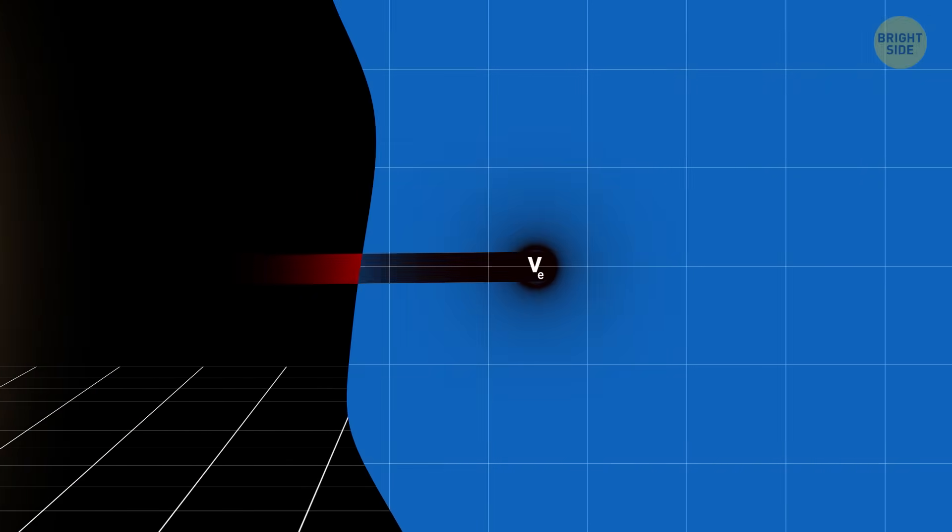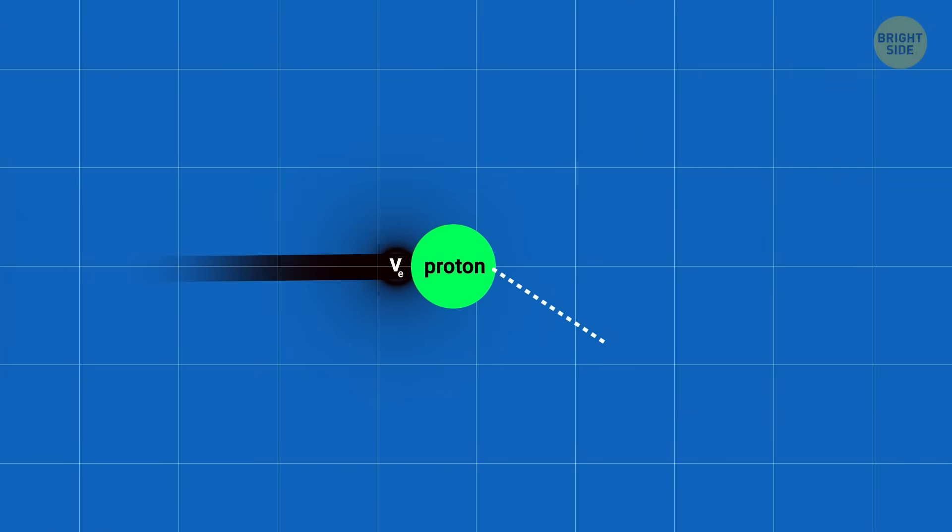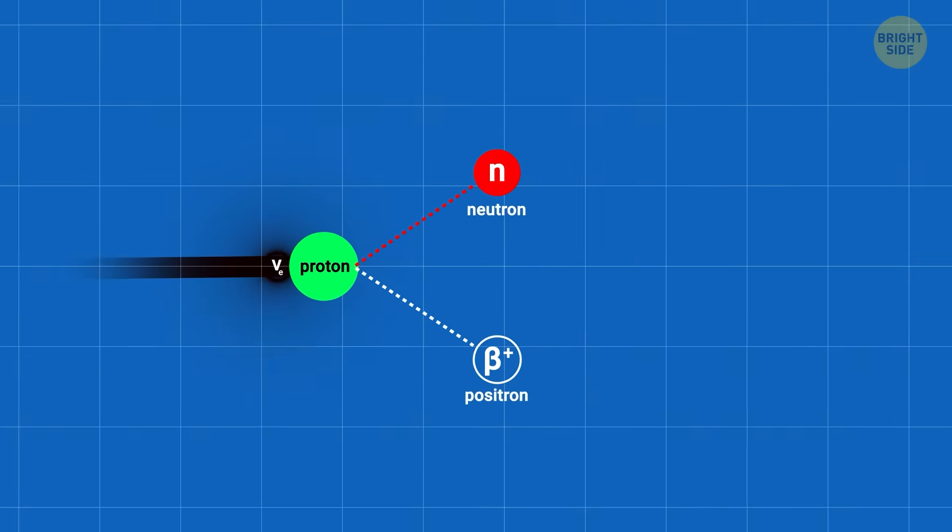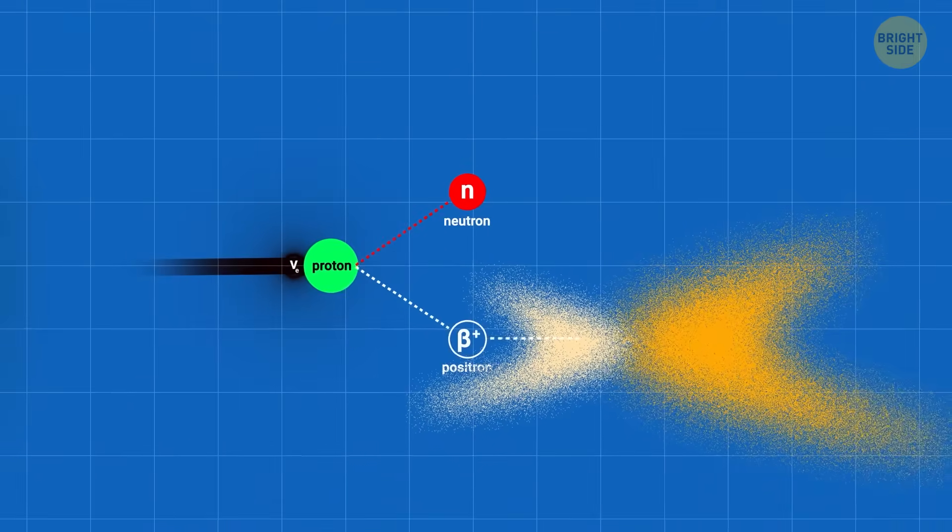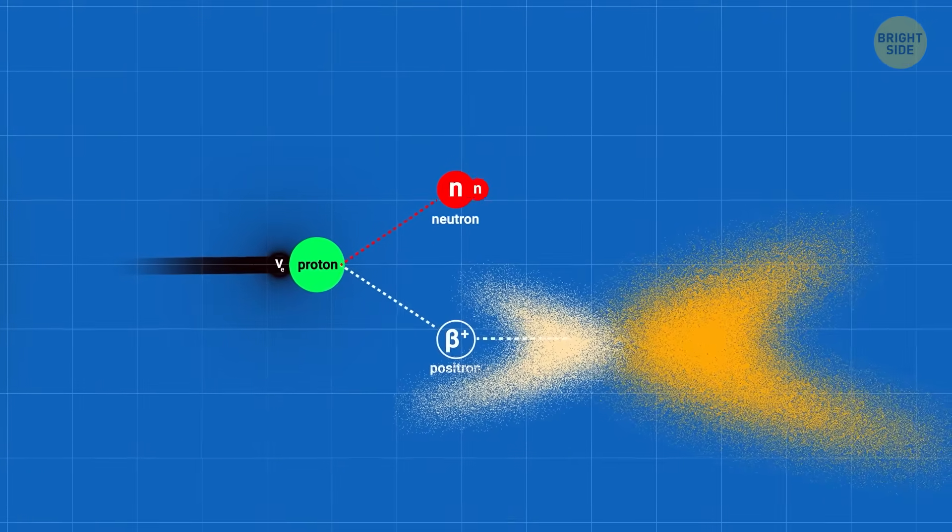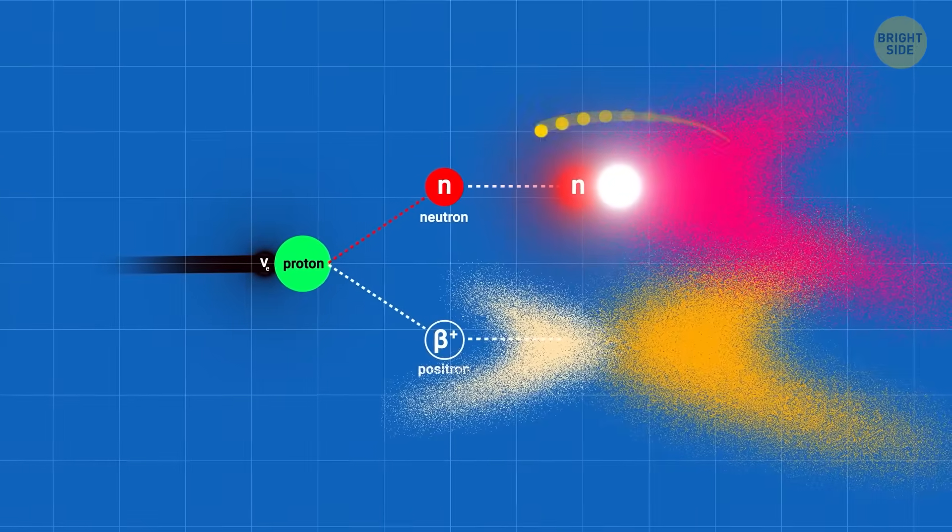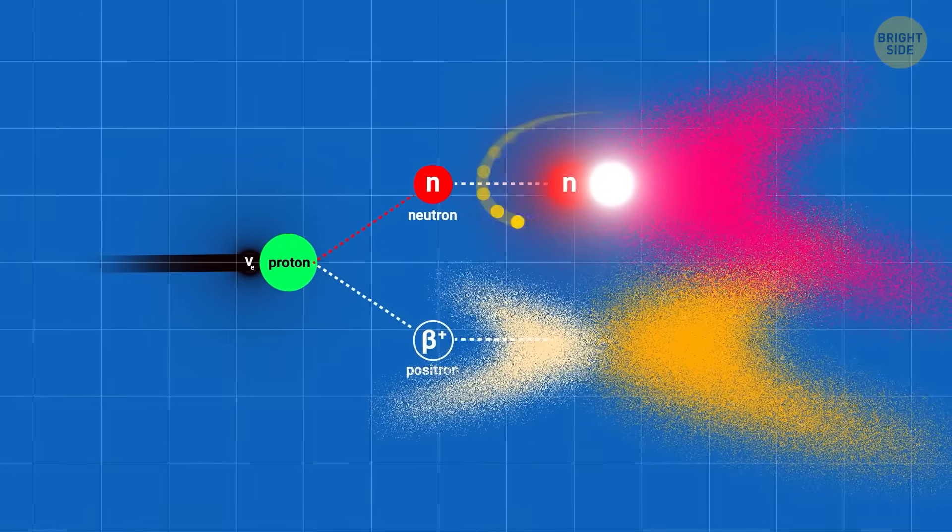Now, here's what happens when an anti-neutrino interacts with Juno's detector. It collides with a proton in the liquid, creating a positron, the antimatter version of an electron, and a neutron. The positron immediately collides with an electron, releasing a burst of light. The neutron, meanwhile, takes about 200 microseconds to combine with an atomic nucleus,